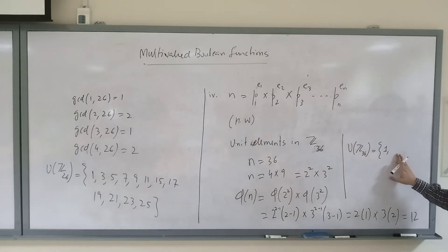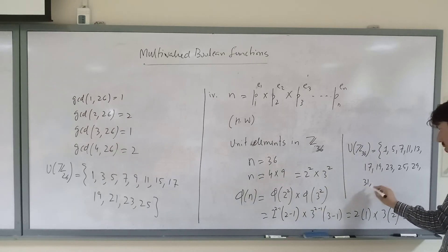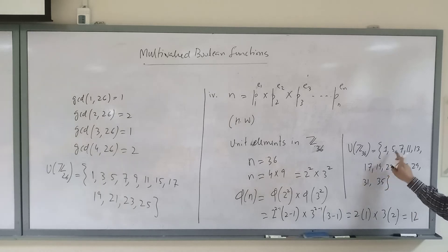Which will be where GCD with 36 is 1: 1, 5, 7, 11, 13, 17, 19, 23, 25, 29, 31, and 35. So how many elements are there? 1, 2, 3, 4, 5, 6, 7, 8, 9, 10, 11, 12. So that formula basically gives you the direct result.